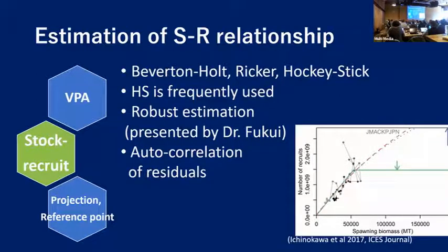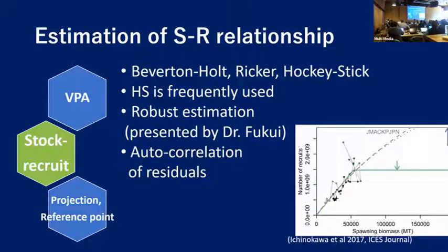This is the estimation part for stock-recruitment relationship. Basically, we can compare the performance of Beverton-Holt, Ricker, and Hockey Stick. But in Japanese stocks, there are many stocks with a very linear stock-recruitment relationship. If we apply Beverton-Holt and Ricker to such relationships, we can still estimate MSY reference points, but in Japanese stock assessment Hockey Stick is frequently used for MSY estimation.